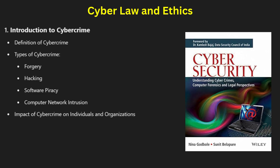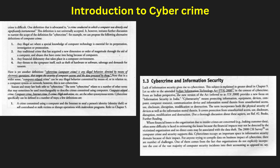So what is cybercrime? Cybercrime refers to illegal activities that involve computers, networks, or digital devices. Unlike traditional crimes, cybercrime is often committed anonymously, making it harder to trace. These crimes can range from financial fraud and identity theft to hacking and cyberterrorism. Cybercriminals use various techniques to exploit vulnerabilities in computer systems, stealing sensitive data or causing disruption. The rise of the internet has made cybercrime a global issue, with criminals targeting individuals, businesses, and even government institutions.